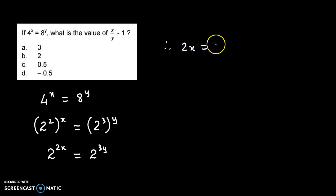So here we will get the value of x upon y. x upon y is 3 upon 2. But we need the value of x upon y minus 1, so we have 3 by 2 minus 1.